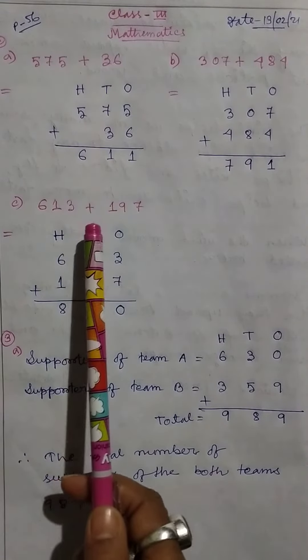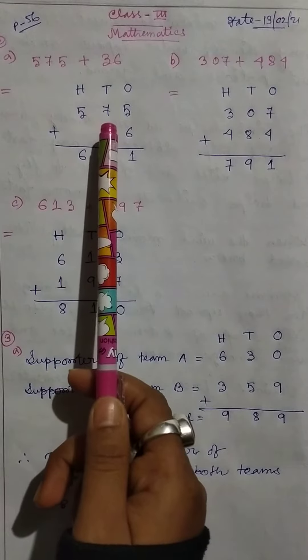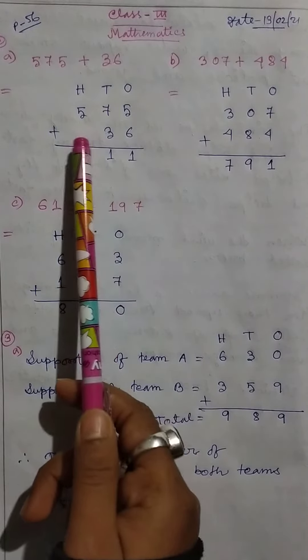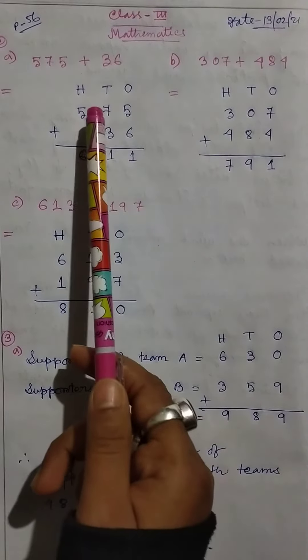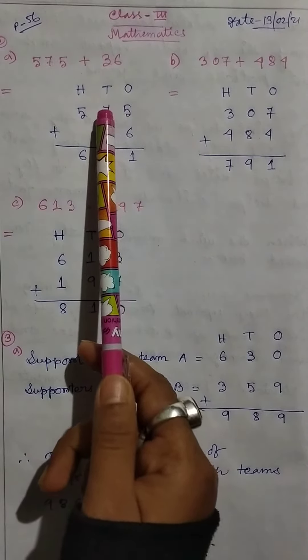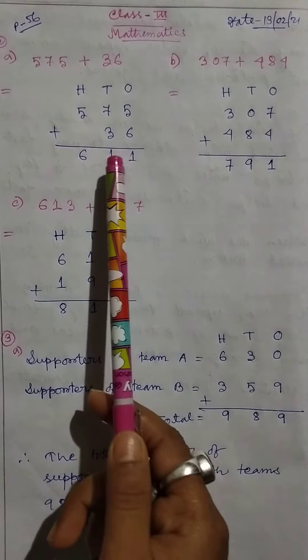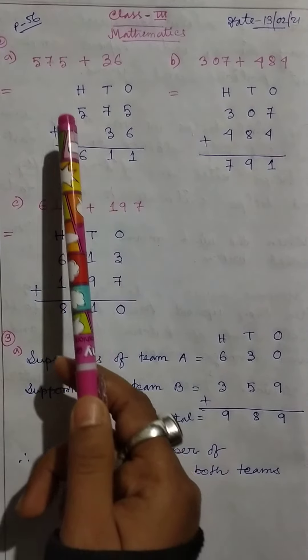Firstly, 575 plus 36. 5 plus 6 equals 11, write one here and carry one. 1 plus 7 equals 8, 8 plus 3 equals 11, so write 1 here and carry 1.